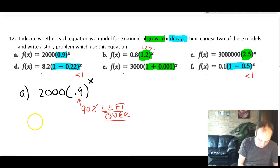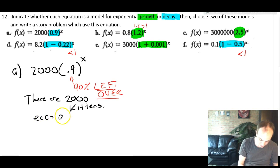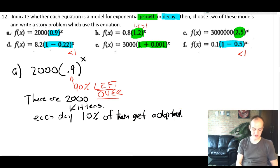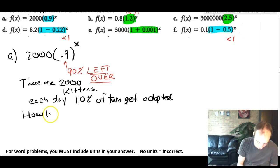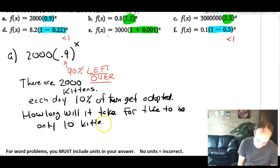We already said that it's decay. So it's something that's decreasing. It's not decreasing at a rate of 9% or even a rate of 90%. This 0.9 means that there's 90% left over each time that it decreases. So a story problem might be like this. There are 2,000 kittens. Each day, 10% of them get adopted. So that's the story. How long will it take for there to be only 10 kittens left.